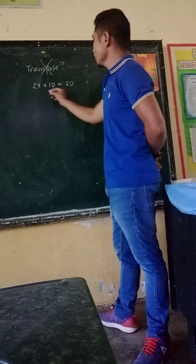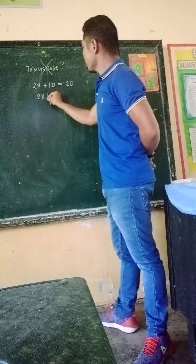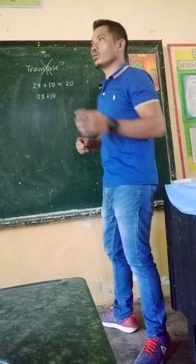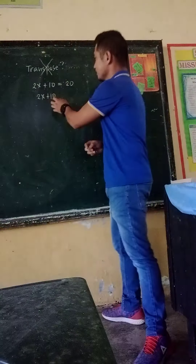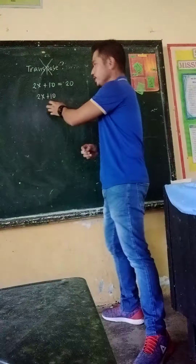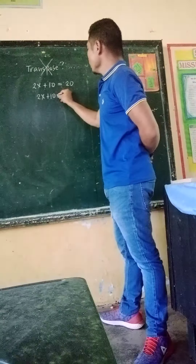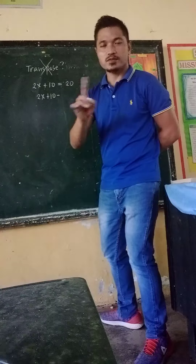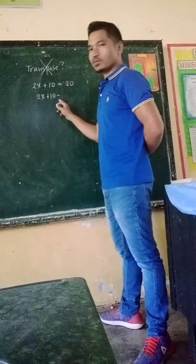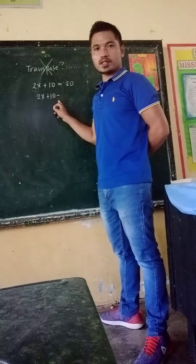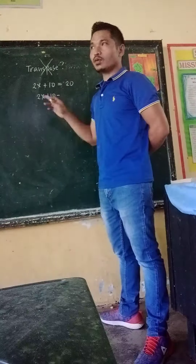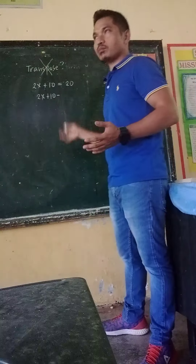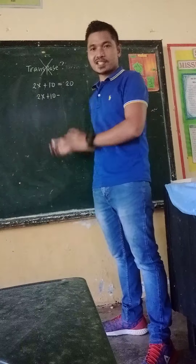So I usually use 2x plus 10. How are we going to remove 10 here? We are not using the word transpose here. We need to use the subtraction property of equality. Meaning, whatever the number is subtracted from the left side should also be the number to be subtracted on the right side.